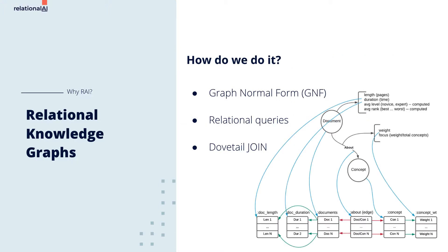Relational knowledge graphs are built on RAI's graph normal form. The relationships between elements are implemented as keys that link the tables. Queries in RAI join tables using their relationship keys — simply identify a condition that matches one or more nodes, then join them against the related properties.